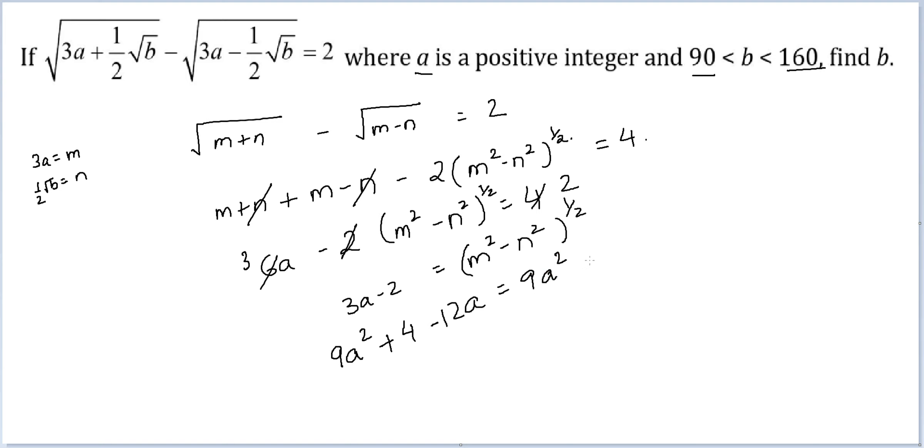9a² minus b/4, this is what I get. So this is cancelled, I am left with b/4 = 12a - 4, or b = 48a - 16.